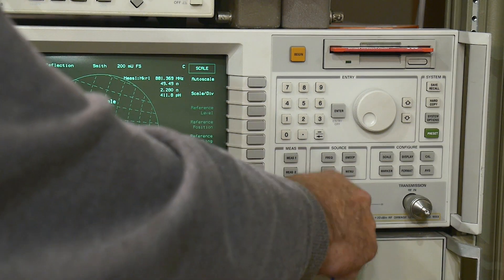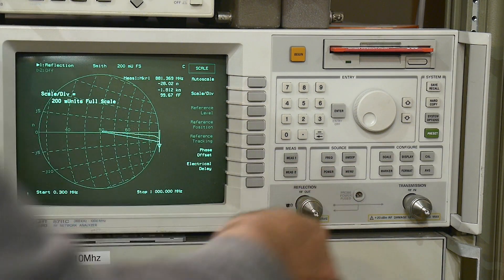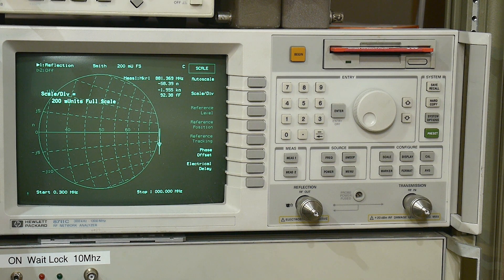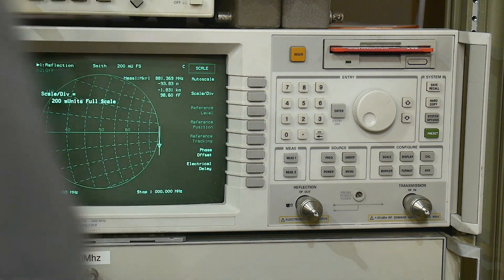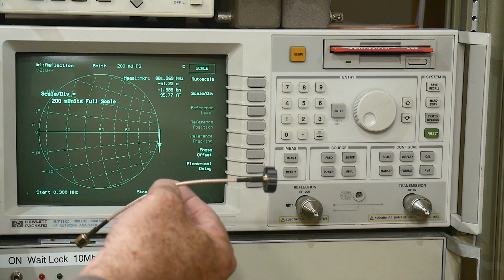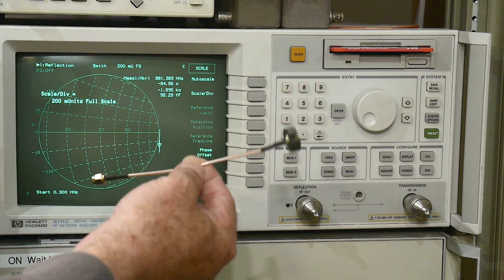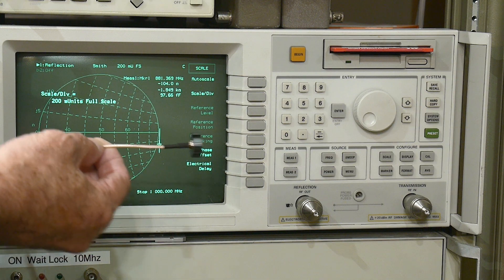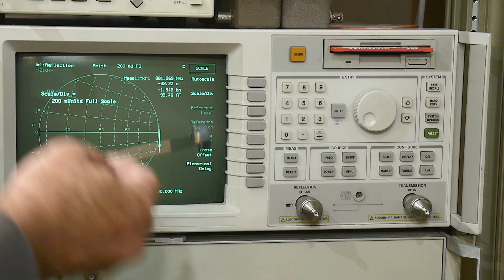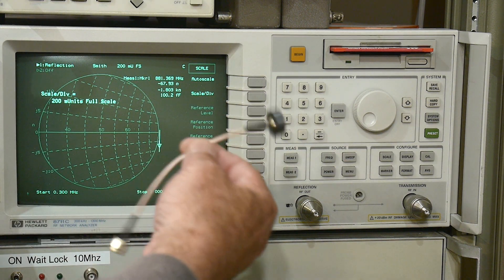Now one thing I wanted to point out is just because you have super short cables doesn't mean you don't have to worry about this stuff. This is a super short cable that came with the original nano VNA, I think. It's one of these kind of beige cables that seem to be everywhere.